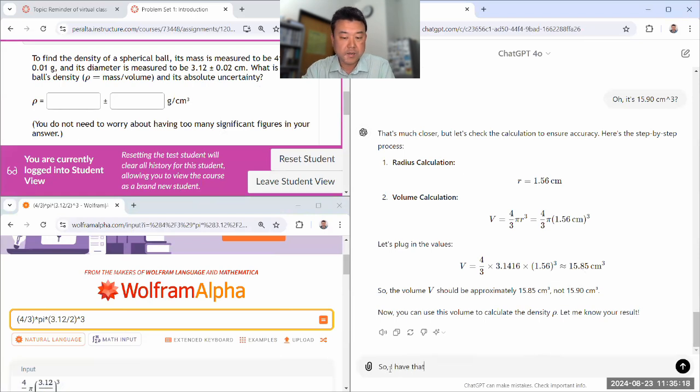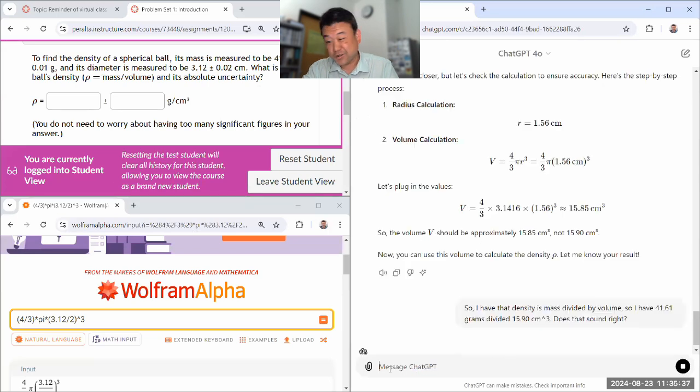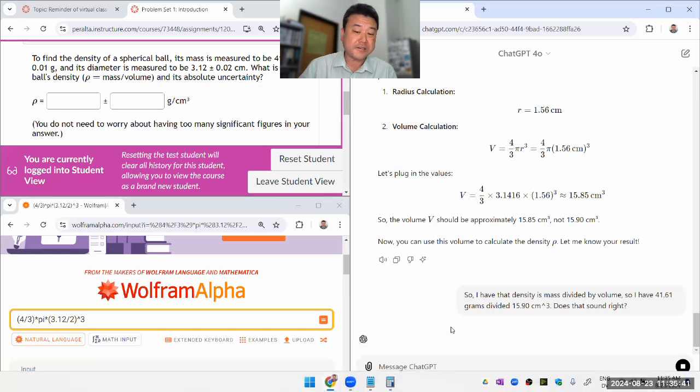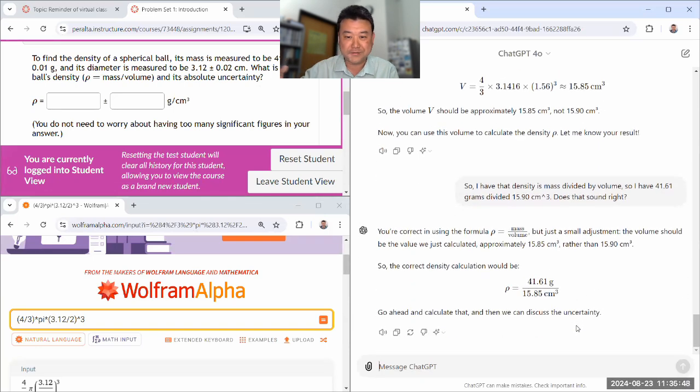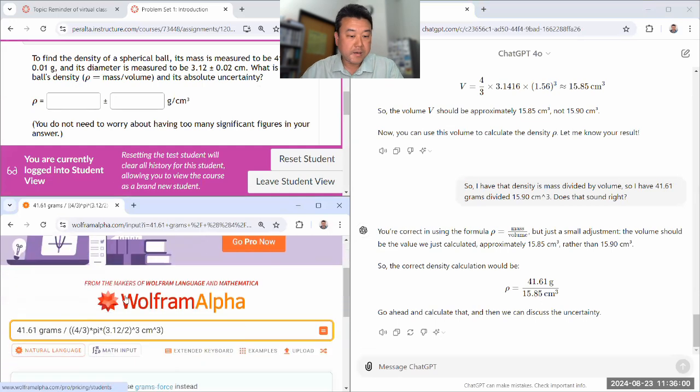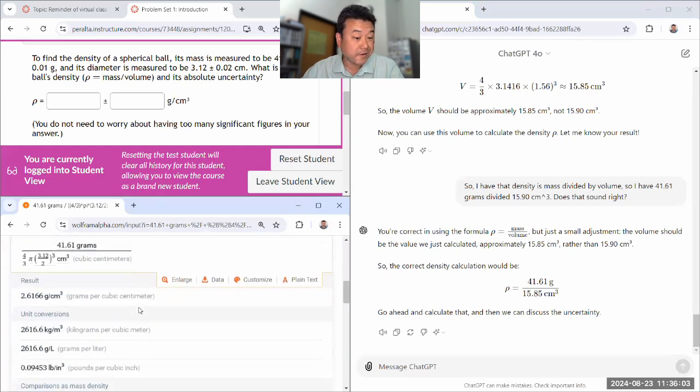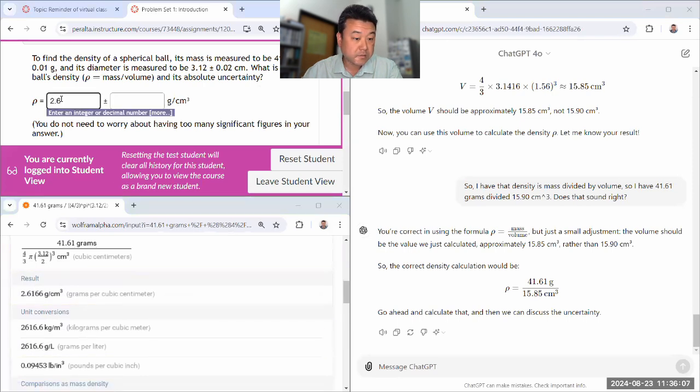So, I got 15.90. Let me make a mistake and see what it does. So, the most common mistake I think a student will make is just not putting any units, which is a mistake. The other mistake is to just put in a default unit, milliliters cube, which is also wrong. Let me see if ChatGPT spots that. Yeah, with a unit. So, it should be 15.9 cubic centimeters.